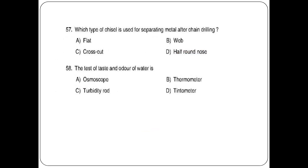Which type of chisel is used for separating metal after chain drilling? Options: flat chisel, web, cross cut, half round nose. The answer is option B: web chisel. The test of taste and odor of water uses — options: osmoscope, thermometer, turbidity rotor, tintometer. The answer is option A: osmoscope.